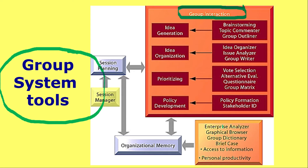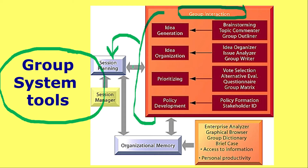The second block covers enterprise analyzer, graphical browser, group dictionary, briefcase, and access to information for personal productivity. From an enterprise point of view, we analyze things graphically, present them, and cover group dictionary terms. Organizational memory is very important — everyone is sharing ideas and documents, so everything must be managed and saved. Session planning covers how the whole group meeting can be organized, managed by the session manager, also called the facilitator.